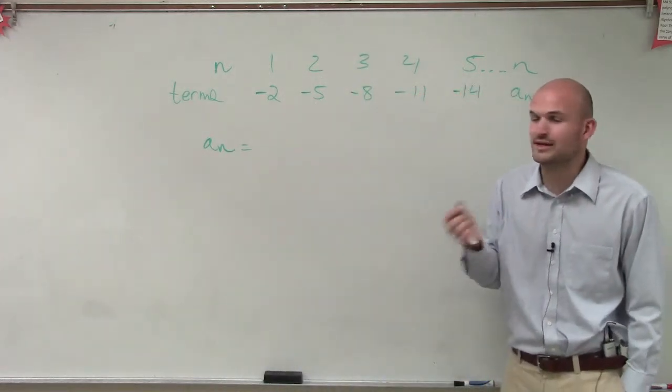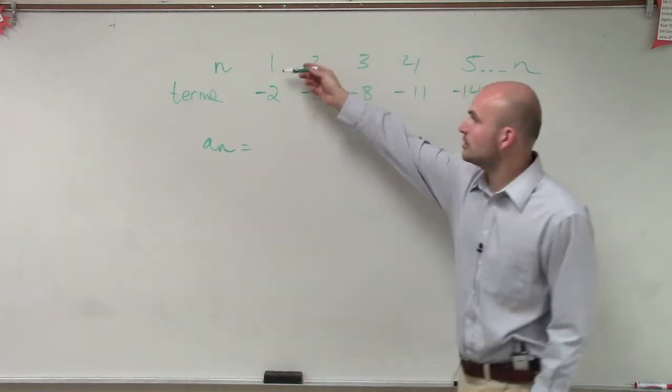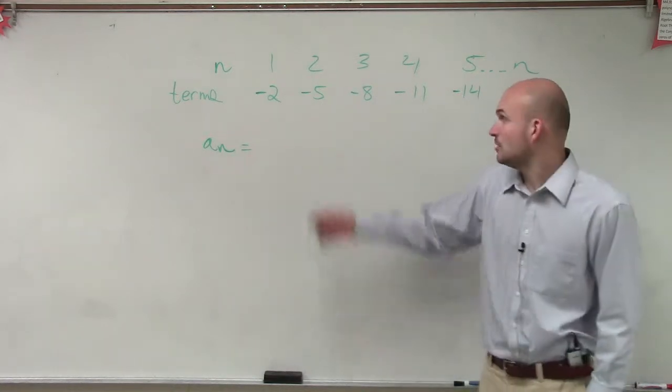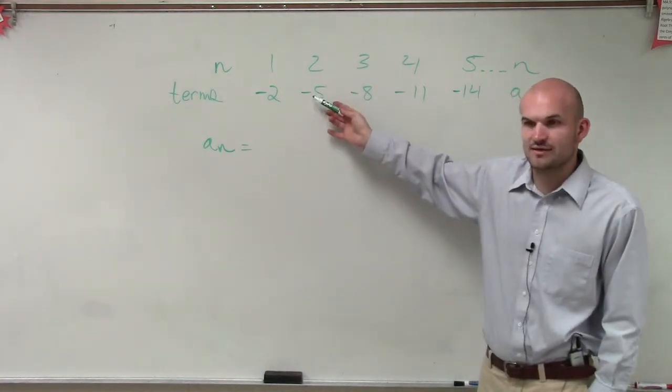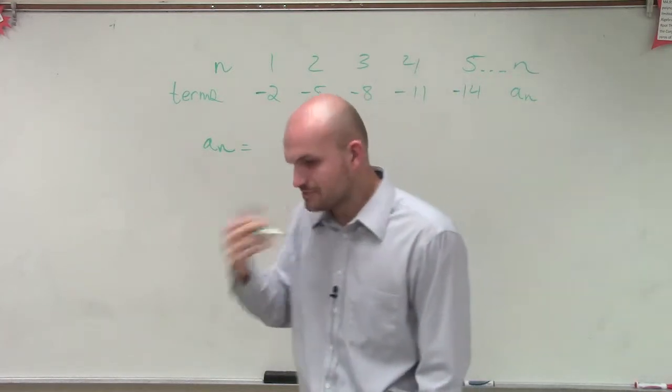The next thing I like to do is look at multiplication and division. So to go from 1 to negative 2, I need to multiply by negative 2, correct? Well, if I multiply 2 times negative 2, does that give me negative 5? No, that doesn't work either, Olivia. So I'm getting into some problems.